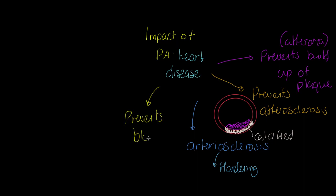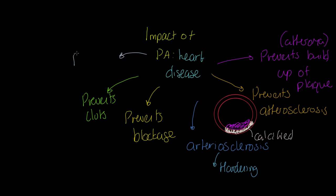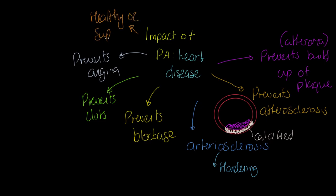That hardening can lead to blockages. Exercise therefore prevents blockages — and a stroke is in some forms exactly that, a blockage to the blood vessels supplying the brain. Exercise also prevents clots, keeping the circulatory system healthy. It also prevents angina, which is effectively a blockage to the heart causing chest pains, and it means we have a healthy oxygen supply to all tissues.